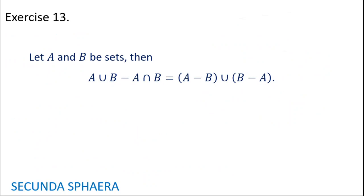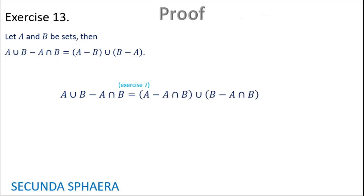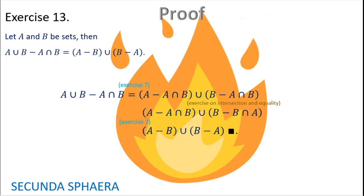Moving on to exercise 13: let A and B be sets. Then A union B without A intersection B is equal to A without B union B without A. This is an interesting and common exercise. Starting with exercise 7, we are able to distribute the difference: this equals A without A intersection B union B without A intersection B. Commuting intersection in the second term gives A without A intersection B union B without B intersection A, and closing with exercise 2 we are done.